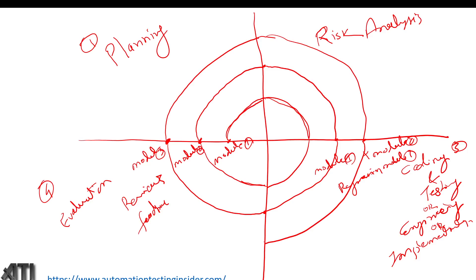This is spiral model — it is the combination of iteration and incremental development. Iteration means repeatable things — we keep repeating the same four phases: planning, risk analysis, coding and testing, and evaluation. Incremental means we are adding module one with module two and module three, progressively building the software. That is the spiral model.